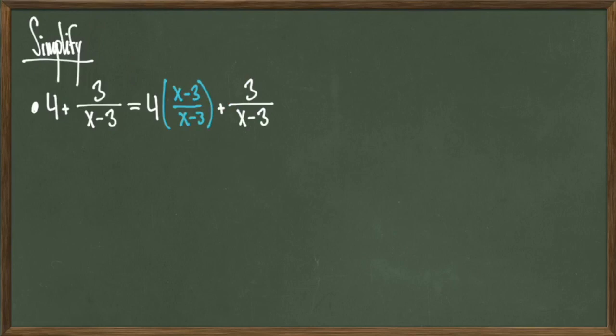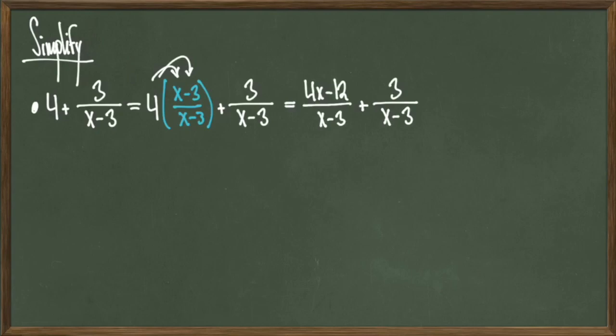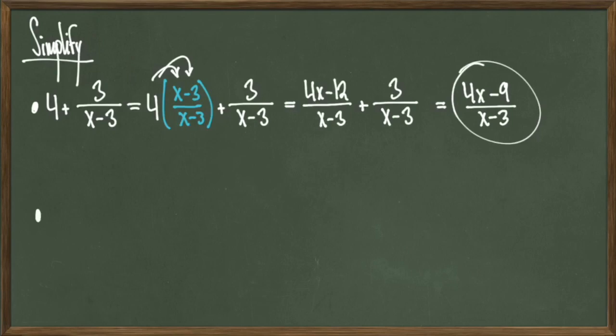Next, I can distribute the 4 into the denominator x minus 3. This gives us the revised equation 4x minus 12 over x minus 3 plus 3 over x minus 3. And since I have common denominators, all I have to do is add the numerators to get the final answer of 4x minus 9 over x minus 3, and we're done.